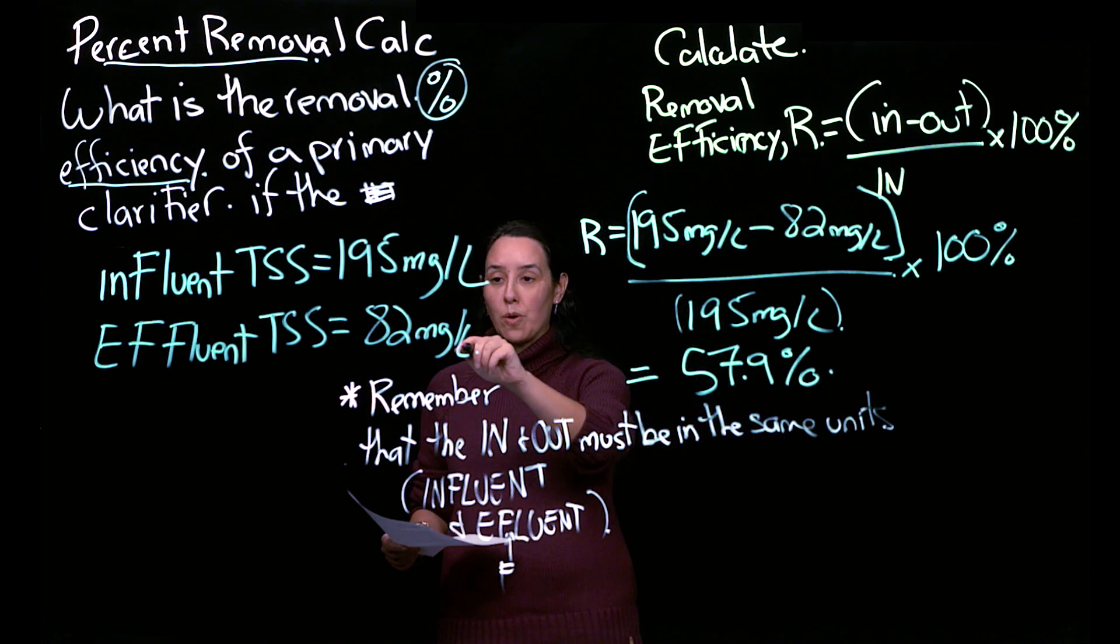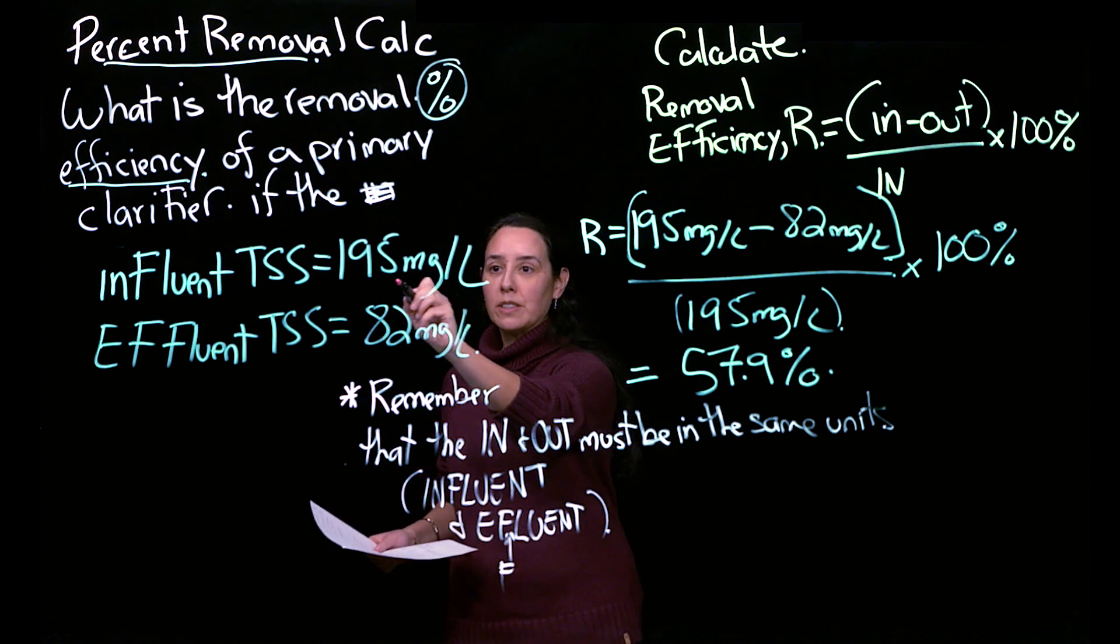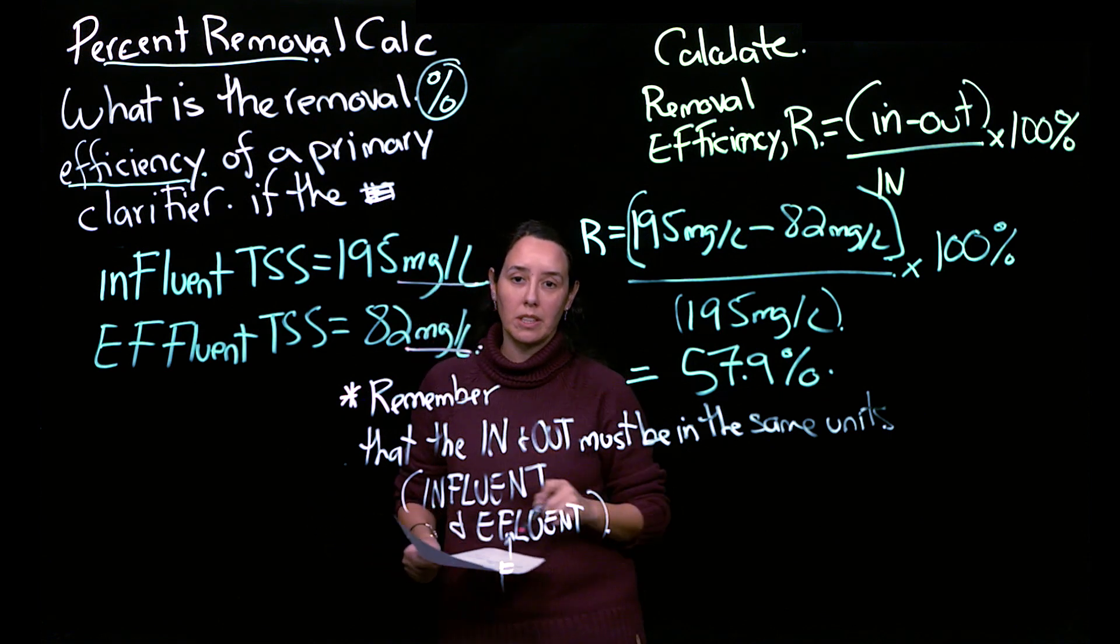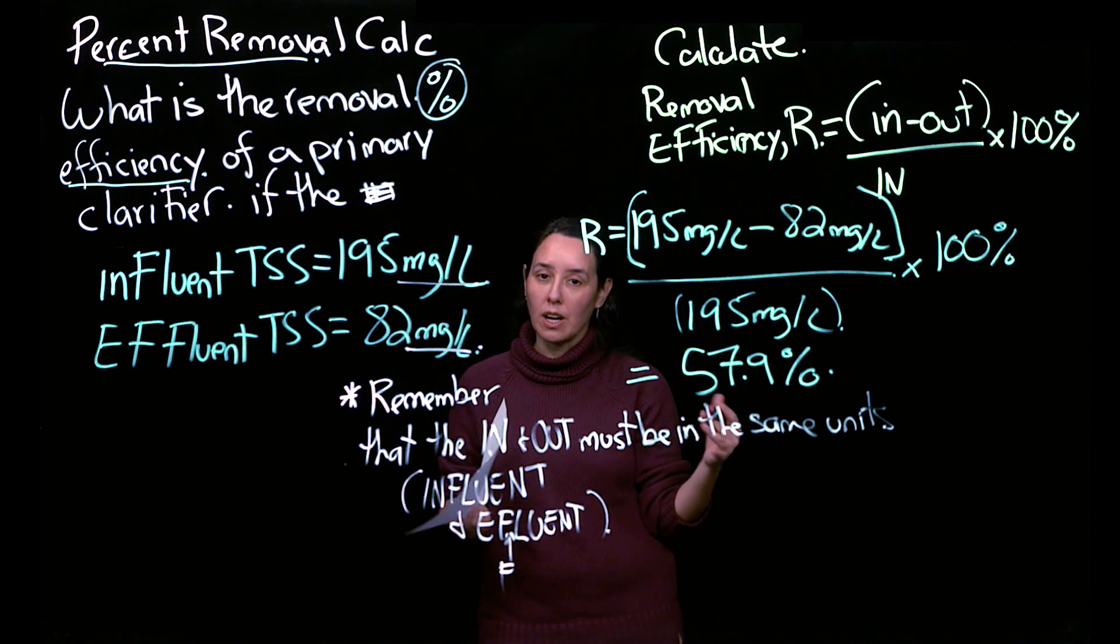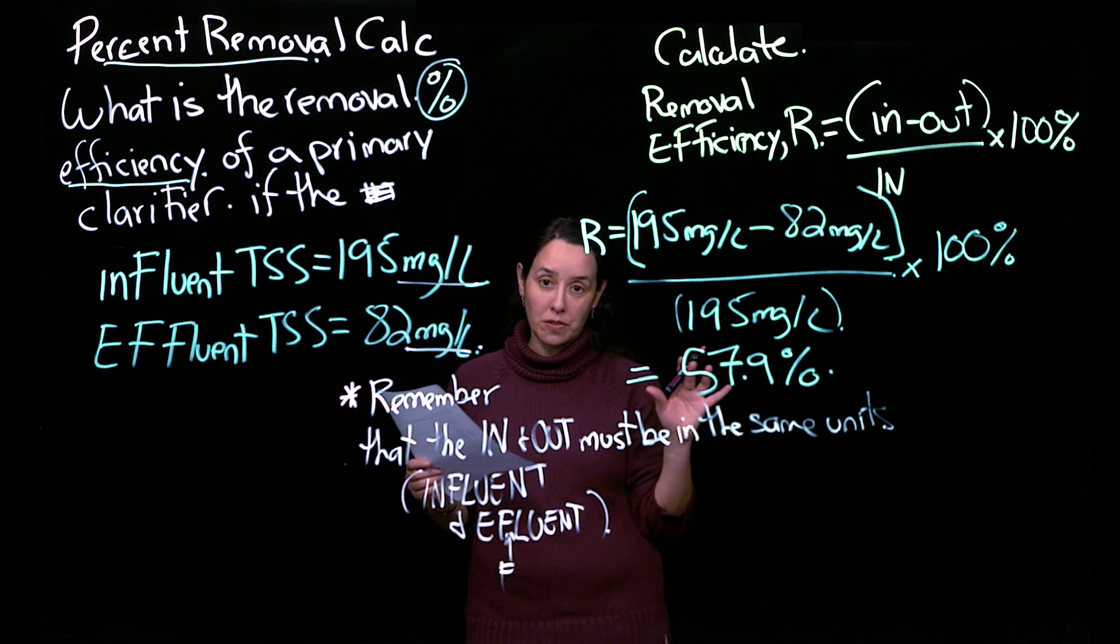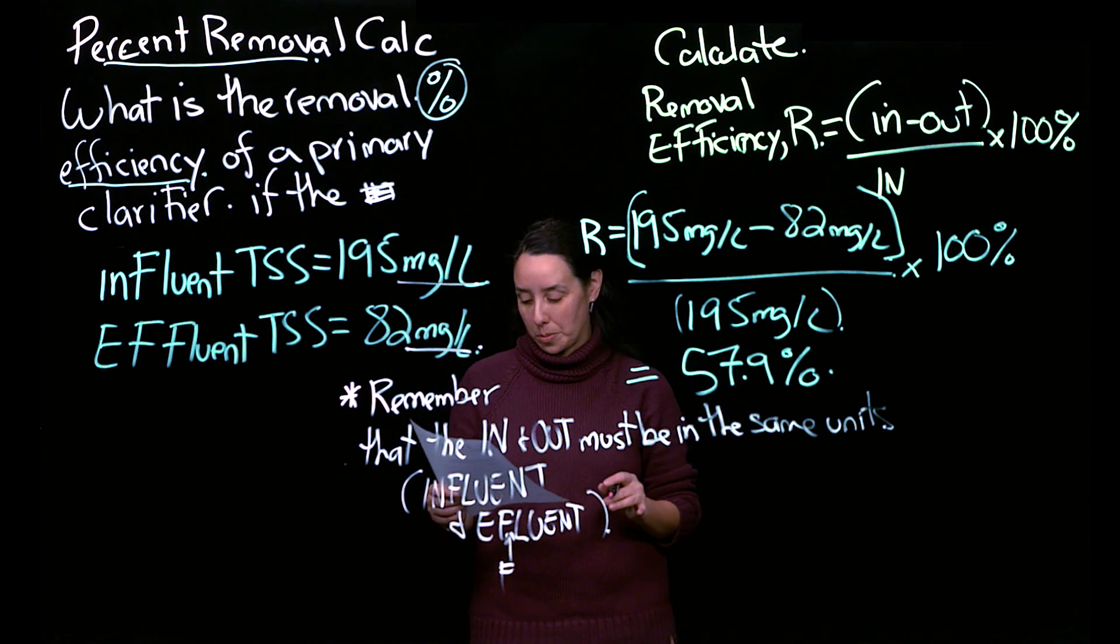In this example, both the influent and effluent are in milligrams per liter. It's always a good idea to check, in case one was in grams per liter, and you'd need to do a conversion to milligrams per liter.